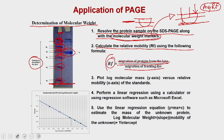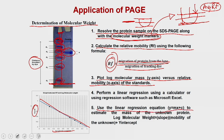Once you have calculated RF values for all marker proteins and your sample, you plot log molecular weight versus relative mobility for the standards to get a negative calibration curve. Then you use linear regression equations to estimate the mass of your unknown protein from its RF value.